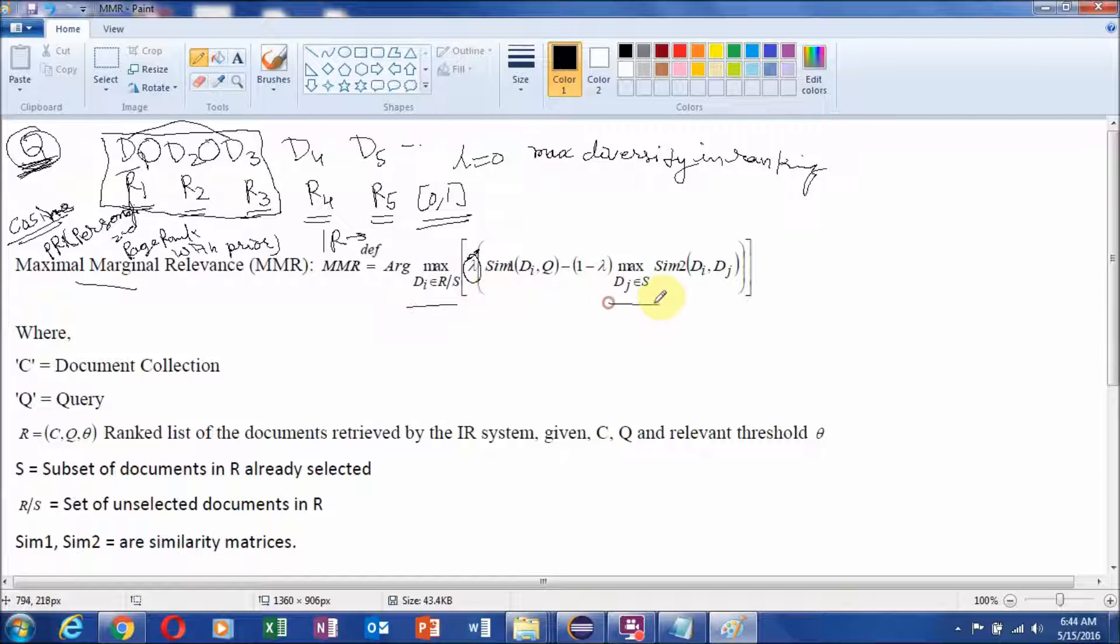Now what are the meaning of these symbols. First I will explain S. S is the subset of documents in R which are already selected. And R\S is the set of unselected documents in R. But what is R? Actually R is the information retrieval system which ranks these documents and presents the ranked list of the documents. Here this ranking system may use cosine similarity or variants of PageRank or any other ranking system.